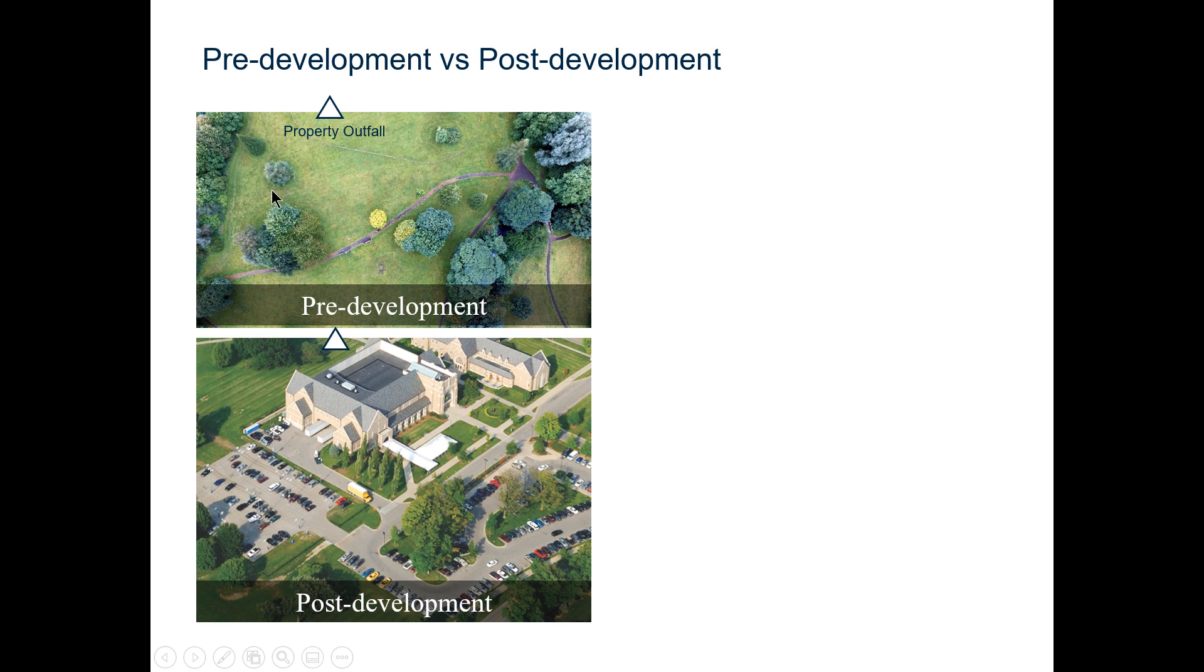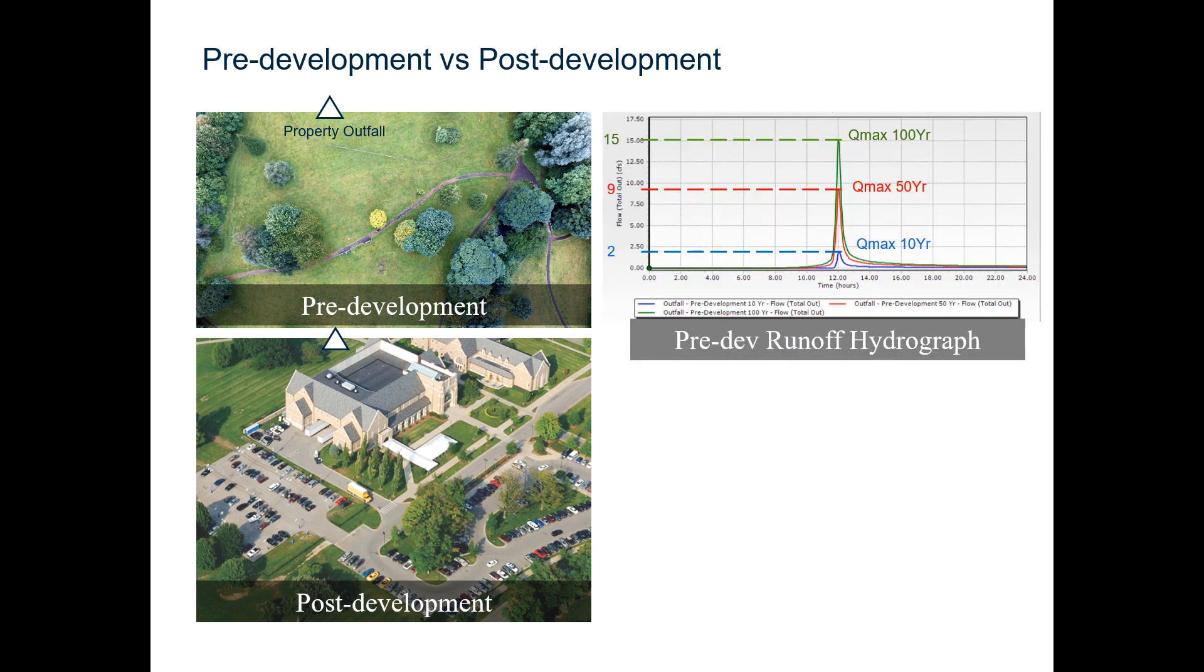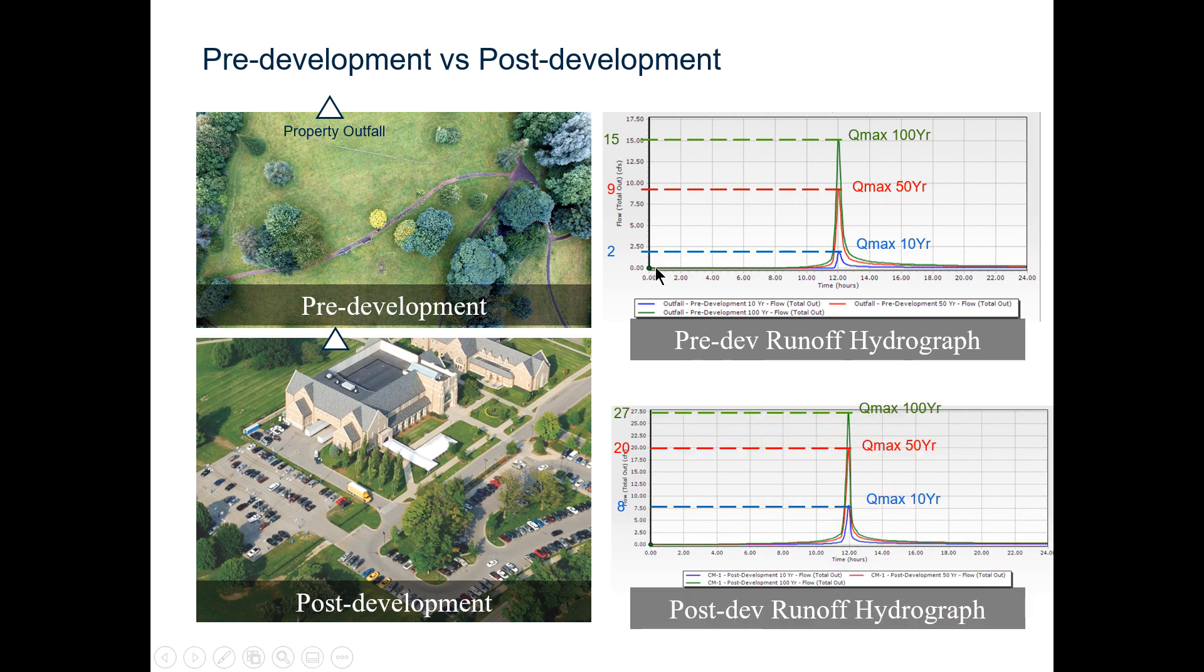So what we have here is a site before it is developed. We refer to this as the pre-development condition and in the bottom left you see the same site after it has been developed, the post-development condition. As you can see in the resulting hydrographs that show how much runoff happens, in the pre-development for the same storm event, in this case a 10-year, we had a peak flow of 2 cubic feet per second but after the site was developed it's increased to about 8 CFS and the same is true for the other storm events. This is why a developer is often required to not exceed the peak outflow that existed before the site was developed.